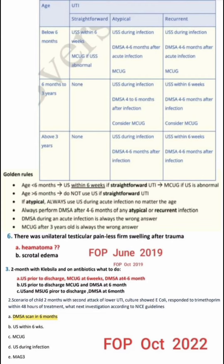For age 6 months to 3 years with straightforward UTI, nothing is needed. For atypical UTI in this age group, first we do the ultrasound during infection, then DMSA 4 to 6 months after infection, and next step is to consider MCUG. For recurrent UTI aged 6 months to 3 years, first ultrasound within 6 weeks, then DMSA 4 to 6 months after infection, and next step is to consider MCUG.